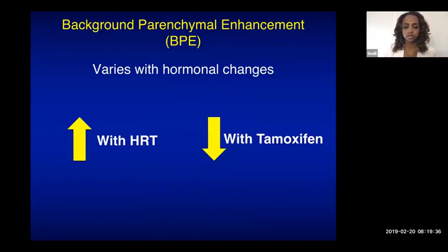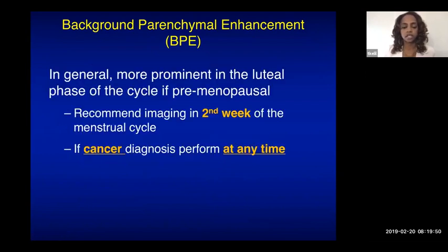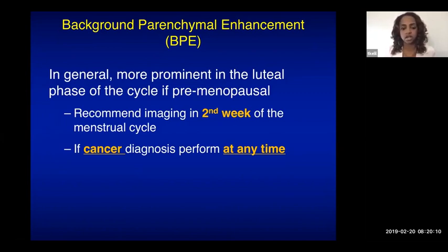BPE varies with hormonal changes — it may be more prominent with hormone replacement therapy or less prominent with tamoxifen. In premenopausal patients, BPE is more prominent in the luteal phase, so the recommended imaging time for screening is around the second week of the menstrual cycle. This helps avoid calling background parenchymal enhancement an abnormal finding.